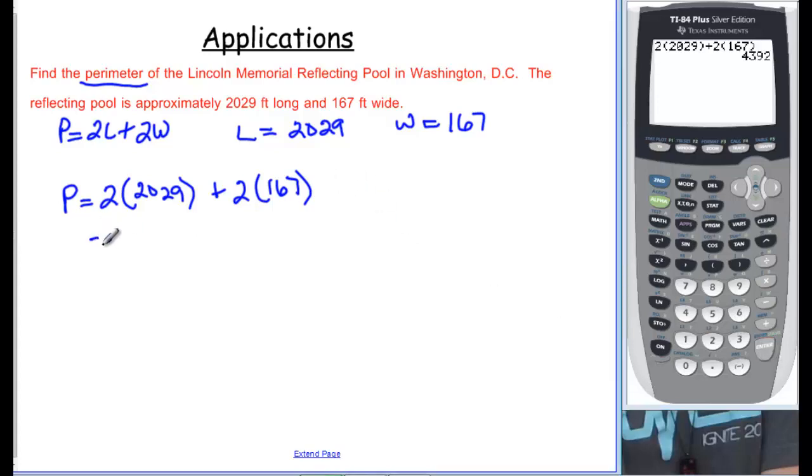And that says that is equal to 4,392, and this would be perimeter in feet. It was in feet up here, so that means that's what our perimeter is going to be.